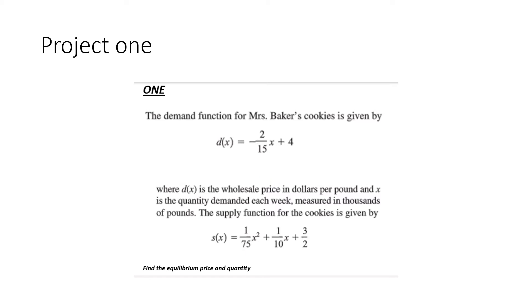Here we go. The demand function for Mrs. Baker's cookies is given by d of x equals minus 2 over 15 x plus 4, where d of x is the wholesale price in dollars per pound, and x is the quantity demanded each week measured in thousands of pounds.